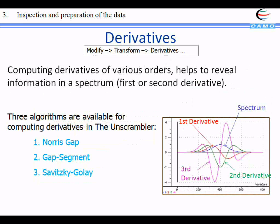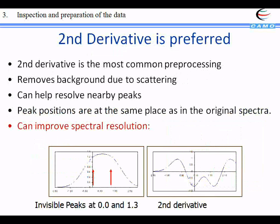Then we can make derivatives. There are different orders: here we have in blue the raw spectrum, in red the first derivative, in green the second derivative, and in purple the third derivative. There is no strict rule on which one gives best results, but usually the second derivative gives good results because it helps to improve spectral resolution. As you can see, we have two peaks that are superimposed in the raw spectrum, and if we use the second derivative the two peaks appear separately. It helps to remove background scattering and resolves the spectrum better.